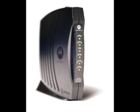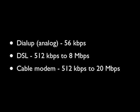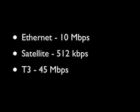A cable modem is even faster. It uses higher bandwidth coaxial cable and can carry between 512 kilobits per second and 20 megabits per second. At top speed, we're talking 20,000 boxes of data screaming down the road each second. Other popular ways of connecting to the net include Ethernet up to 10 megabits per second, satellite up to 512 kilobits per second, and T3 lines used by some businesses with speeds up to 45 megabits per second.